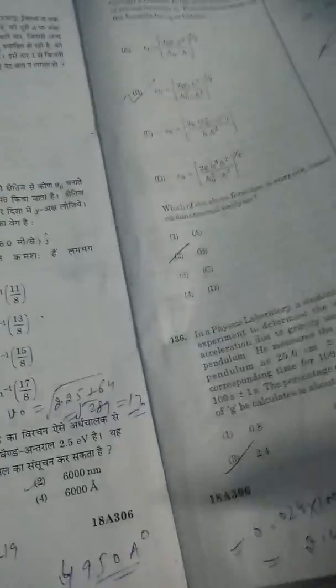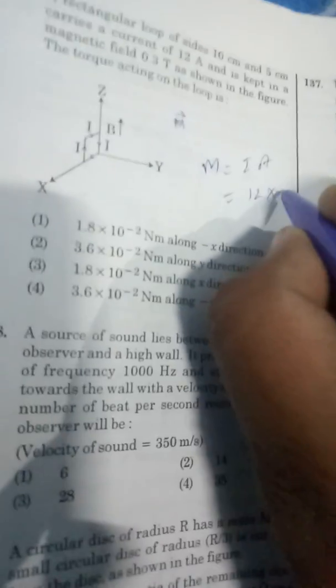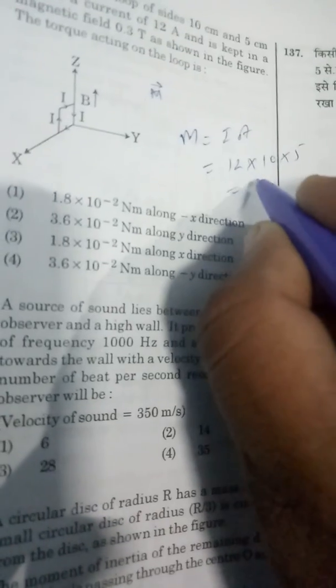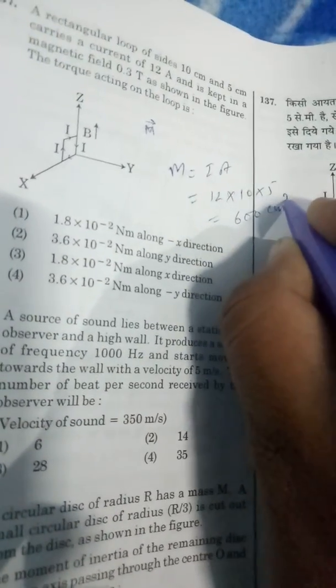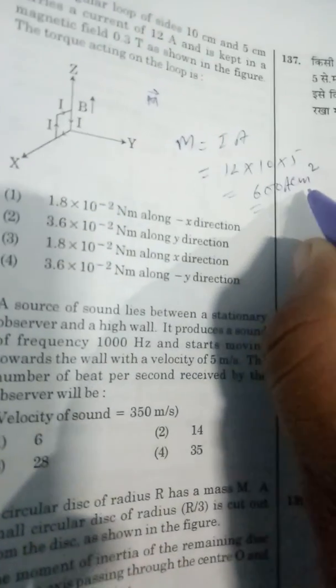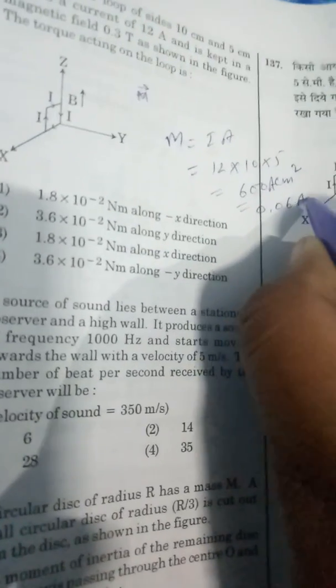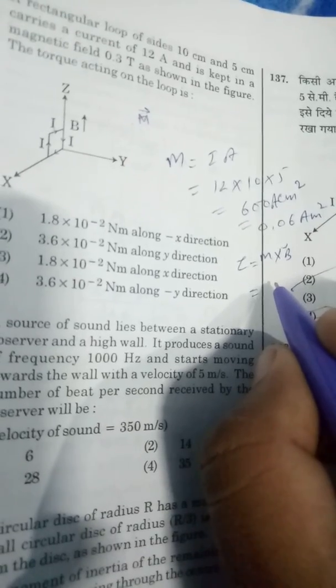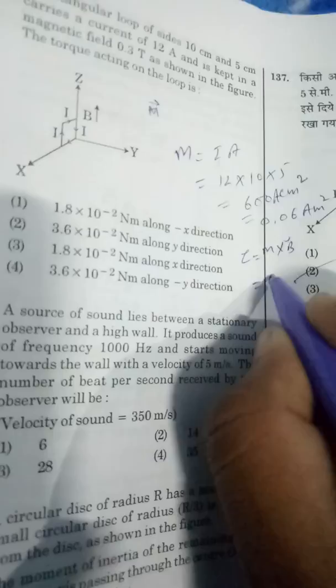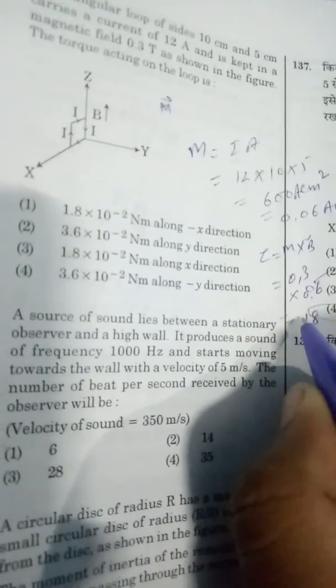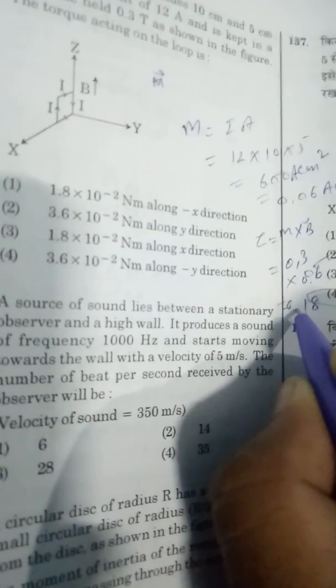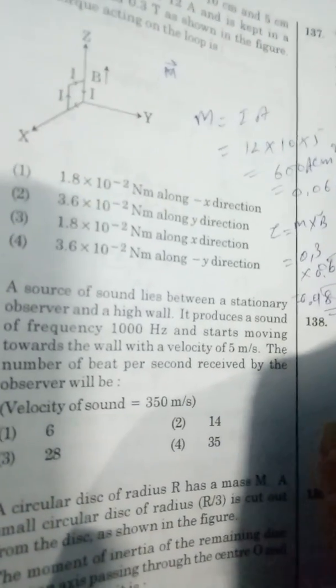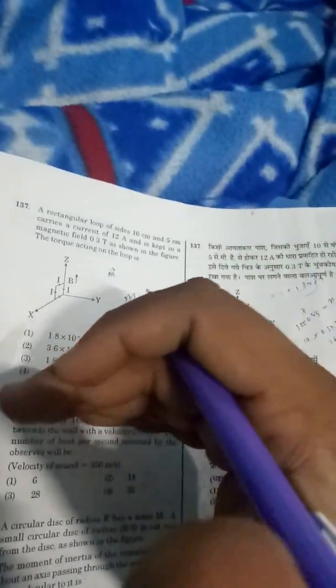In question 137, magnetic moment m equals i times A. Current i is 12 mA, area of the loop is 10 × 5 = 50 cm². So m equals 12/1000 ampere times 0.005 m², which is 0.06 ampere meter² along y-axis. Torque is m cross B. Since m and B are perpendicular, m is along y-axis, so m cross B equals 0.3 × 0.06 = 0.018 or 1.8 × 10^-2 along x-axis, because y rotated towards z gives positive x direction. Correct option is option number 3.